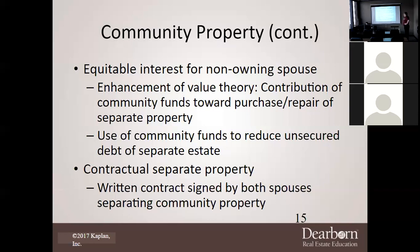Contractual separate property means there can be written contracts signed by both spouses separating community property. You can enter a prenuptial agreement — a prenup basically says what's mine is mine and what's yours is yours. Before you get married you could agree that if you have everything and your spouse has nothing, if you divorce you keep all your stuff and they keep theirs. Good luck getting somebody to sign a prenup, though — most younger people won't voluntarily do that.